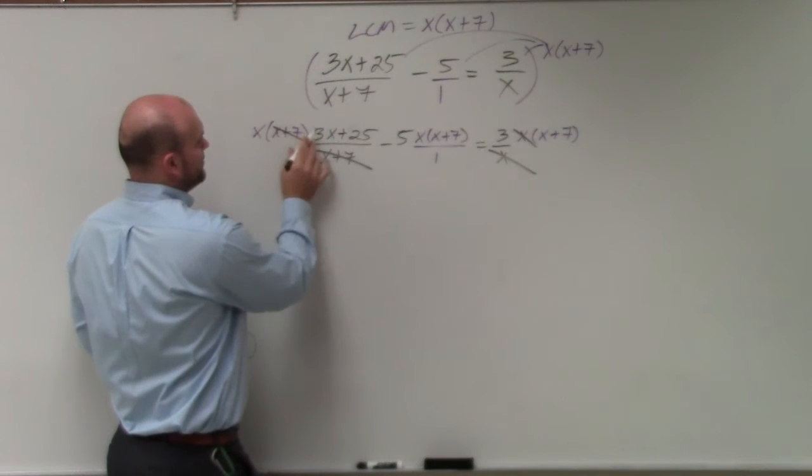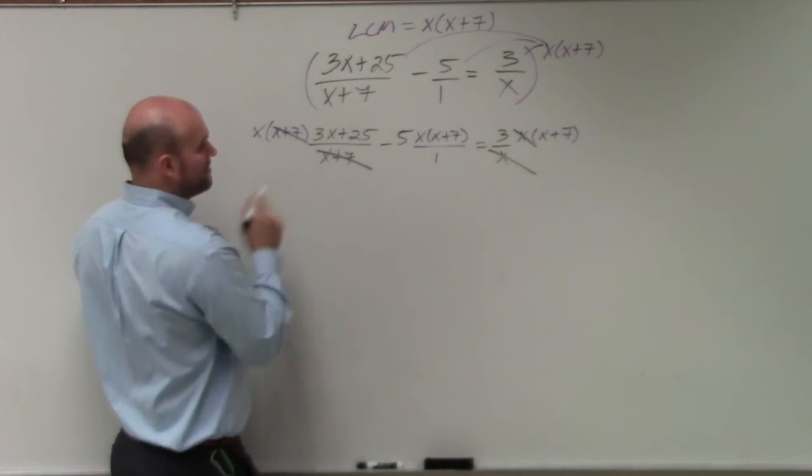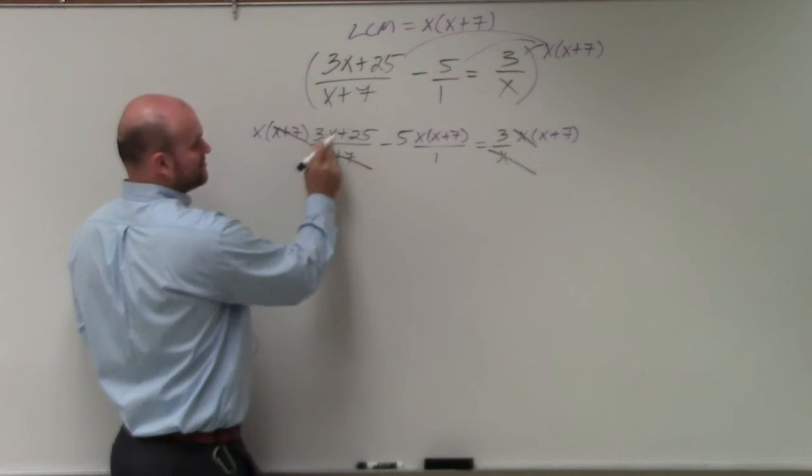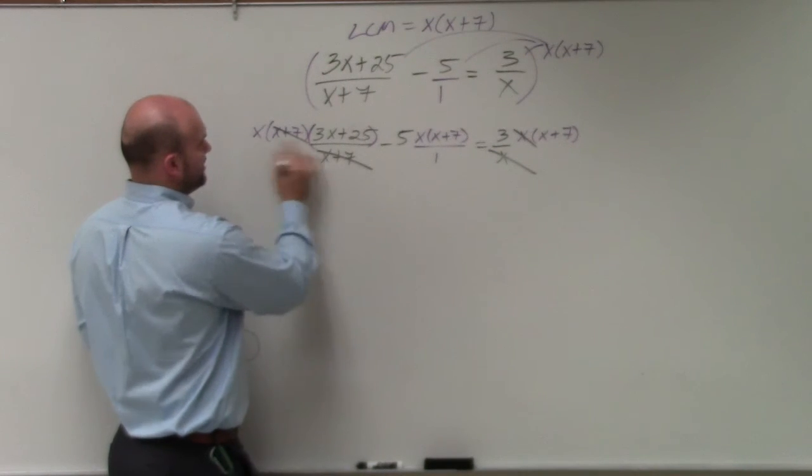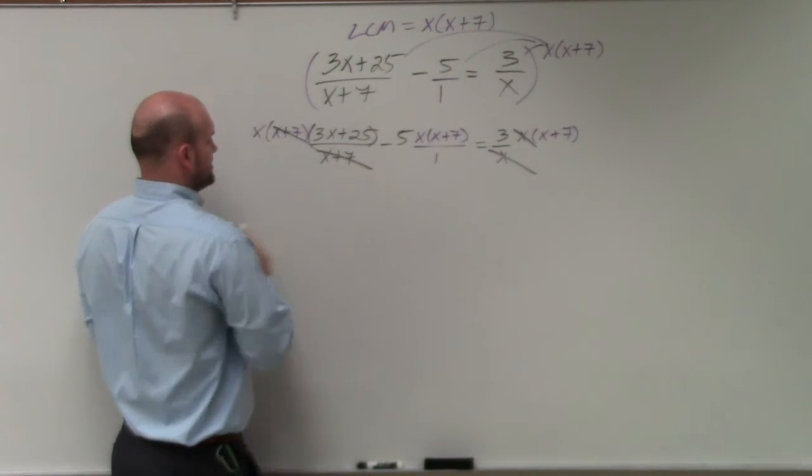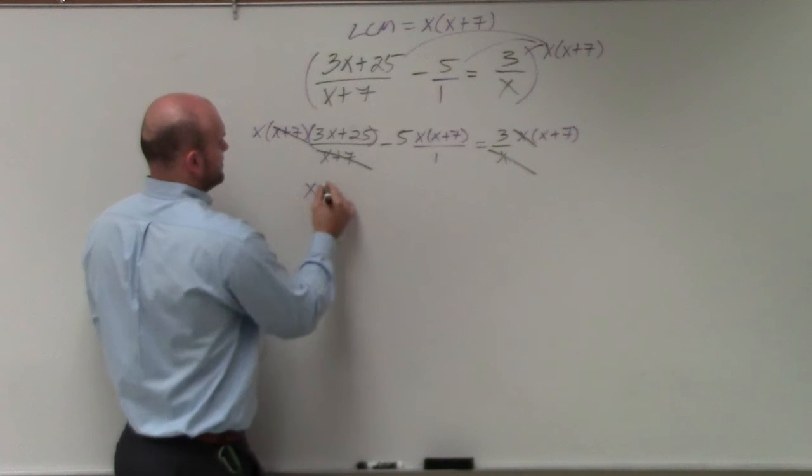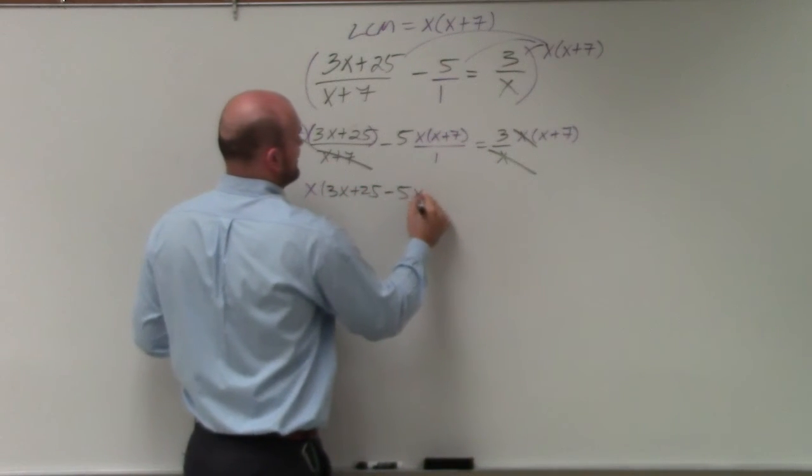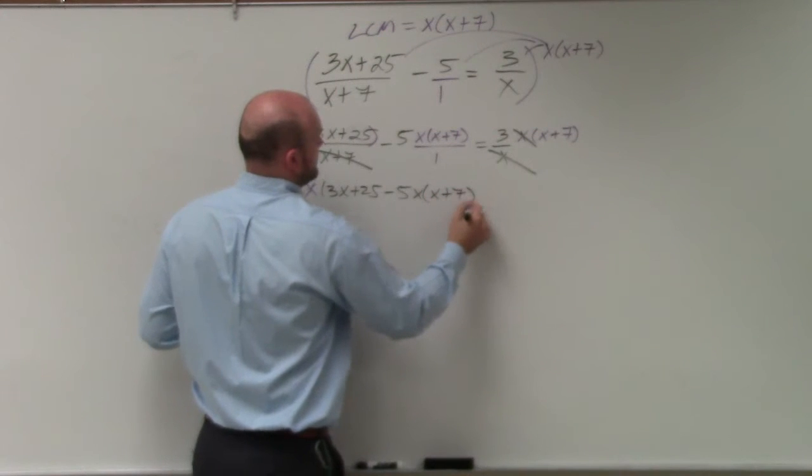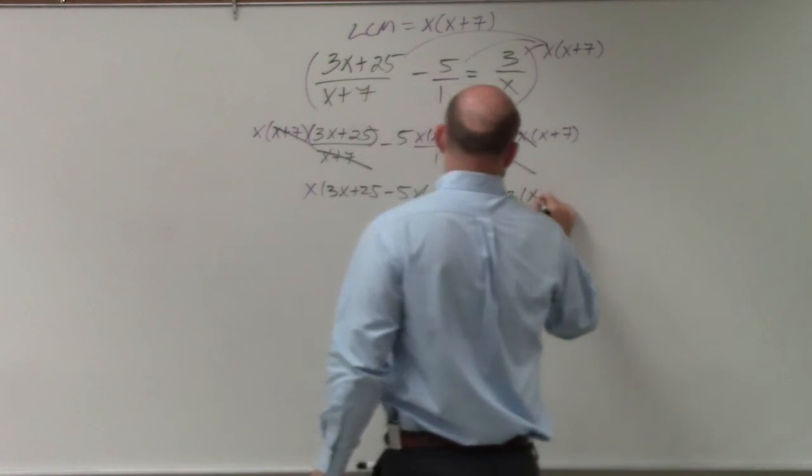So now, I just have 3 times, but we've got to be careful. This is an expression, so that's really in parentheses, and everything else is there. So in reality, I have, actually let me just write it out. So I have x times 3x plus 25 minus 5x times x plus 7 equals 3 times x plus 7.